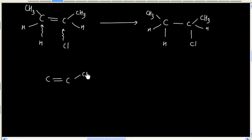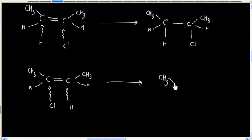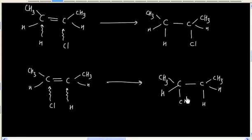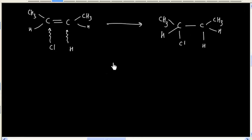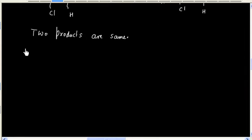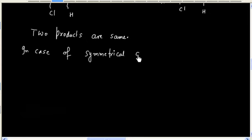Now next time we can do the reverse — hydrogen is added to this carbon and chlorine is added to this carbon. So we will have this product. Now if you see, these two products are the same. So we can say in case of symmetrical alkene, addition of HCl gives only one product.